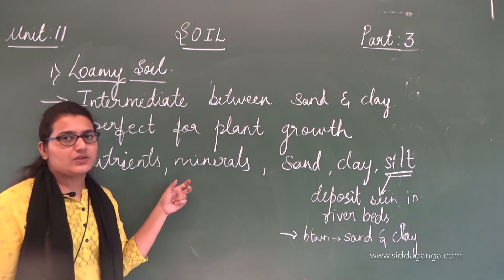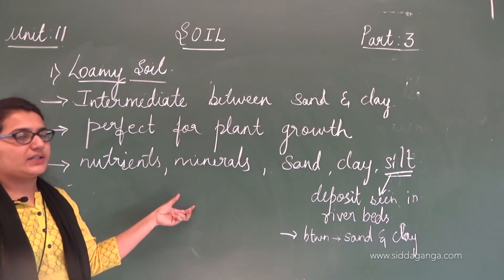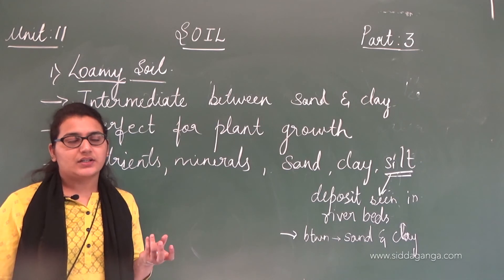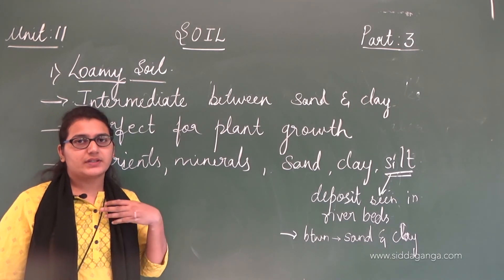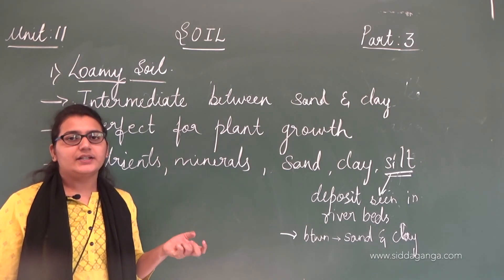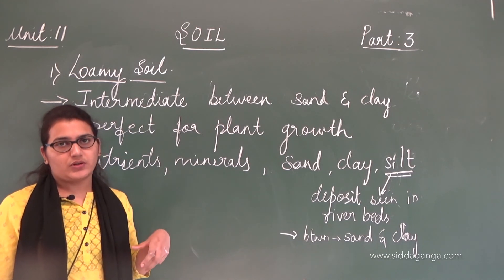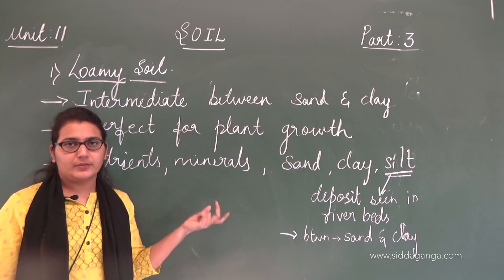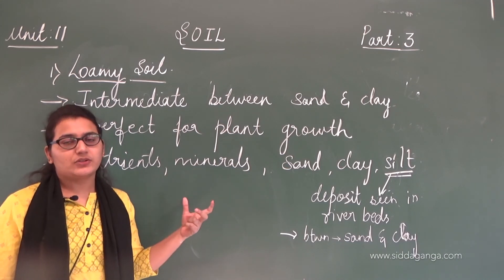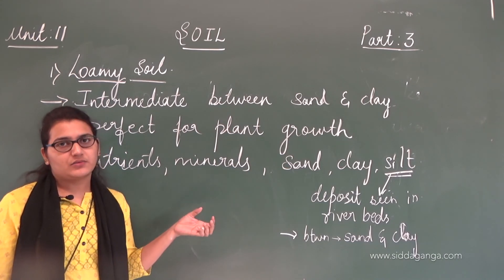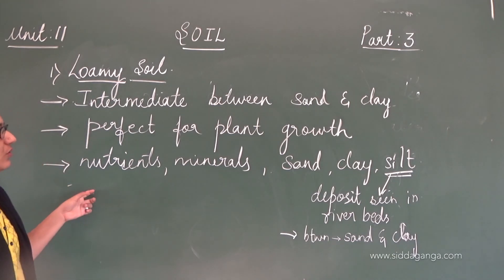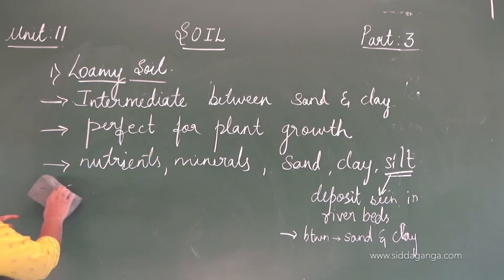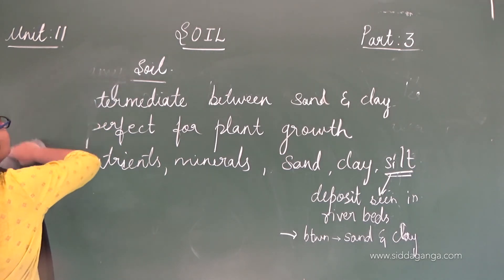Since loamy soil contains adequate amount of water — water does not just drain off easily and it does not hold too much water either — all these properties make this soil very favorable for plant growth. These are the three types of soil: sandy, clayey, and loamy soil.